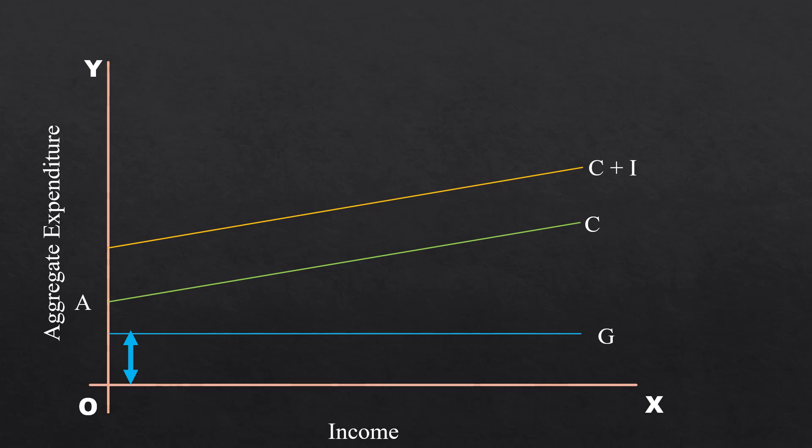By vertically adding Government expenditure with C plus I curve, we get the curve C plus I plus G. This is the aggregate demand curve of three sector model.